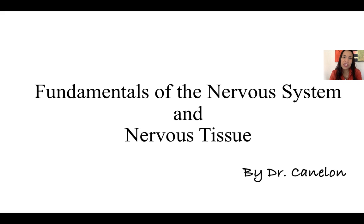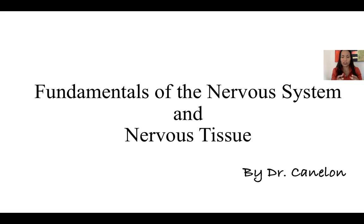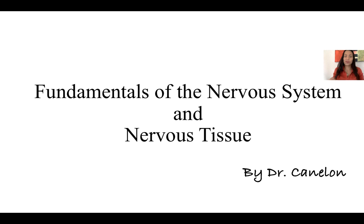Hello guys! Today we start talking about the nervous system. We're going to talk only about the fundamentals — an overview of how the nervous system and nervous tissue works. We're going to move back and forth through the levels of organization within the organ system, starting at the organ system level, then as a tissue, then as the organs of this system, moving up and down this ladder of levels.